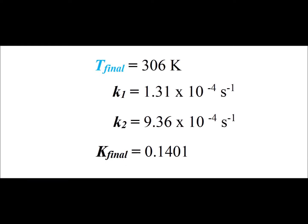At the final temperature of the T-jump, 306 degrees Kelvin, the forward rate constant is 1.31 times 10 to the minus 4 inverse seconds. The reverse rate constant is 9.36 times 10 to the minus 4 inverse seconds. And now the equilibrium constant is 0.1401.